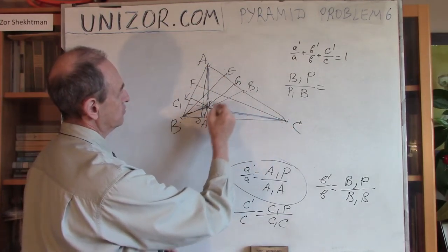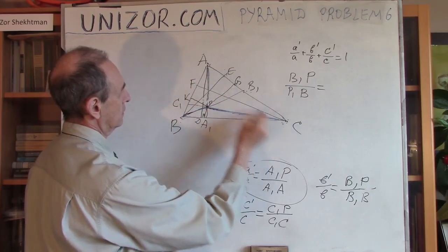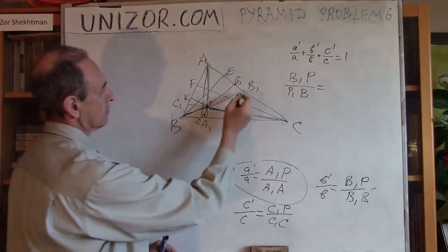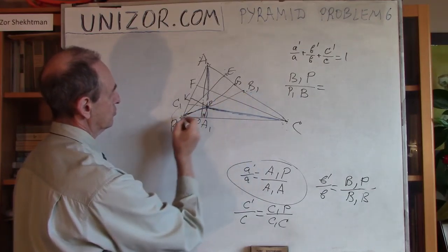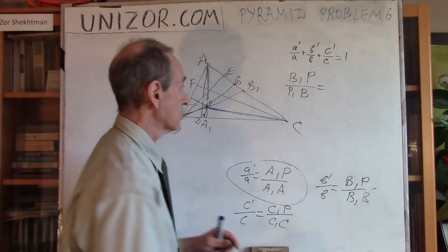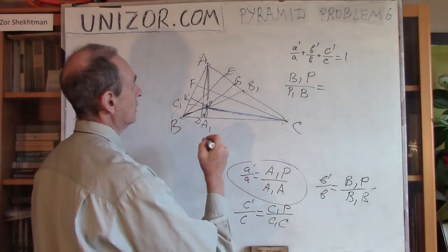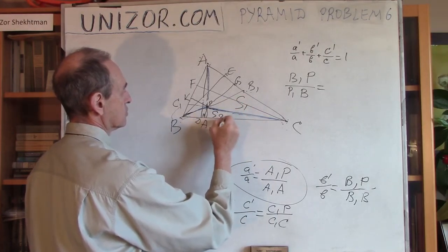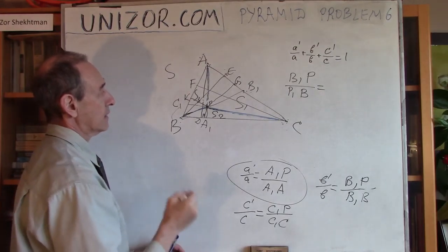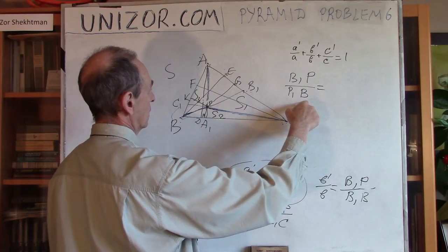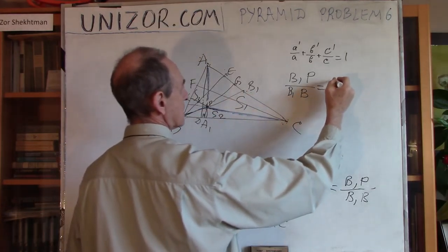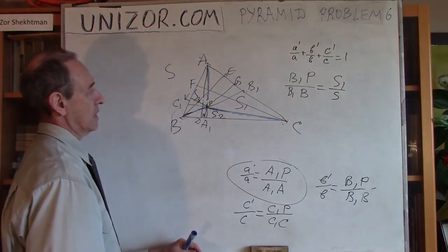AC is the base and PG is the altitude of APC. For ABC, correspondingly, AC is the same base and BE is altitude. So the ratio between B1P and B1B is the same as the ratio of altitudes, and since they have the same basis it will be the same as ratio of the areas. If I call the areas S1, S2, and S3 for these three triangles and the area of the entire triangle would be S, I can say that B1P divided by B1B is exactly S1 to S.